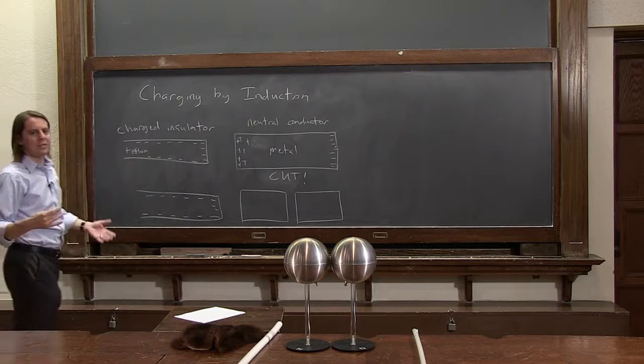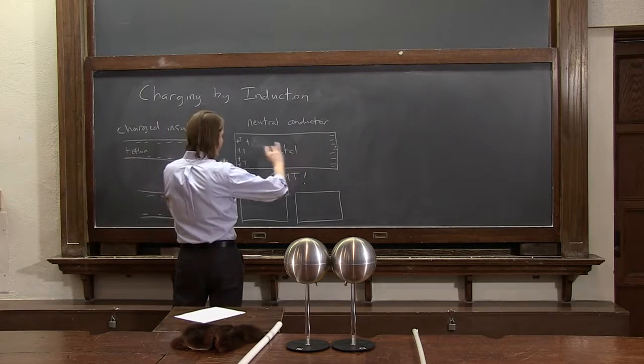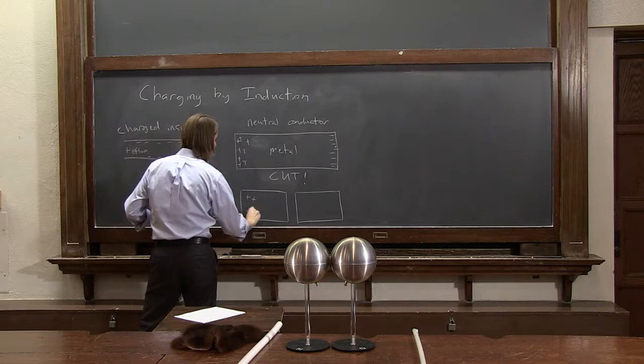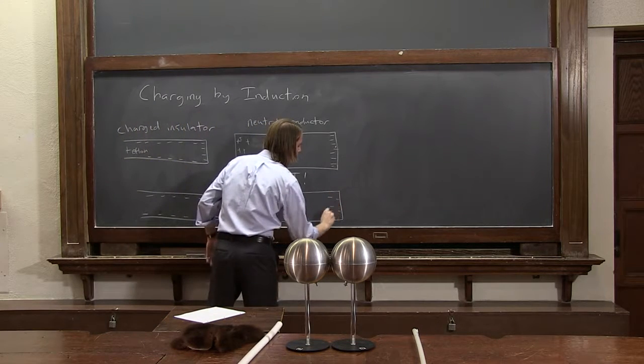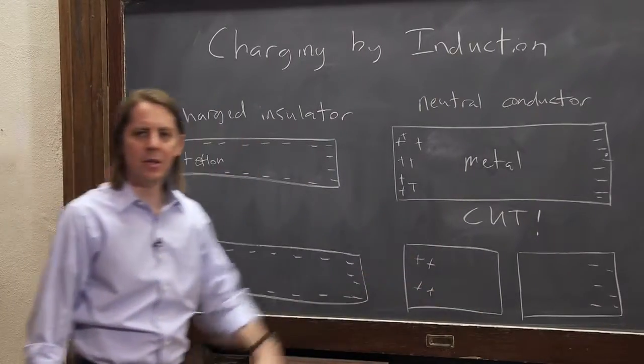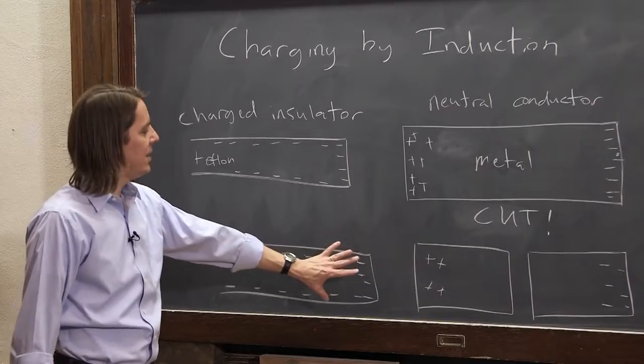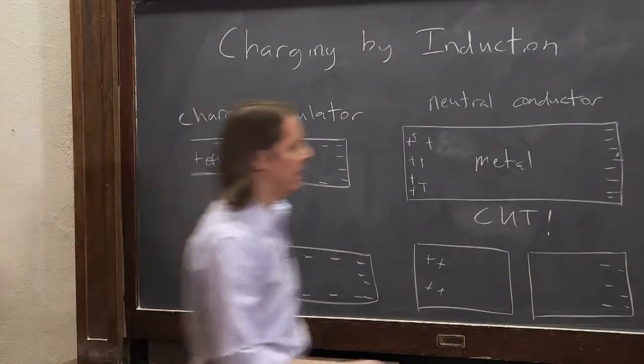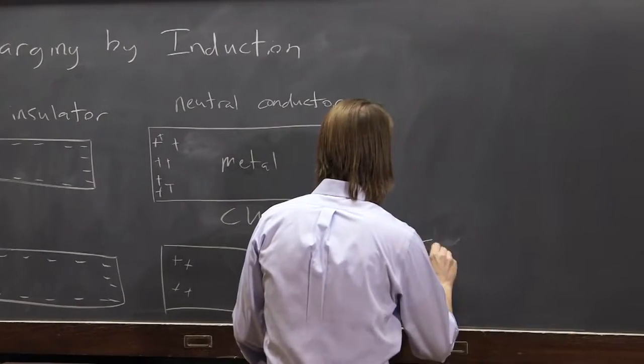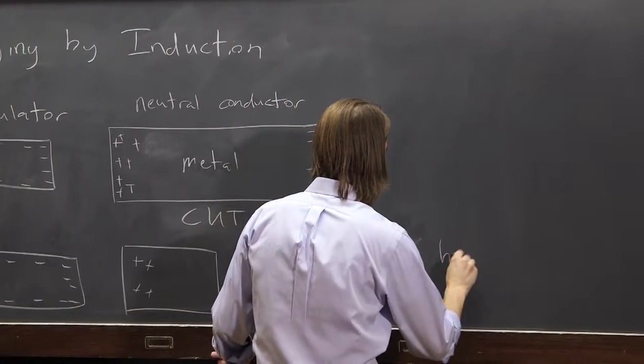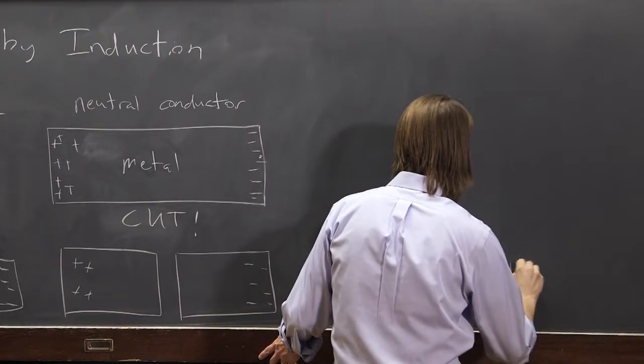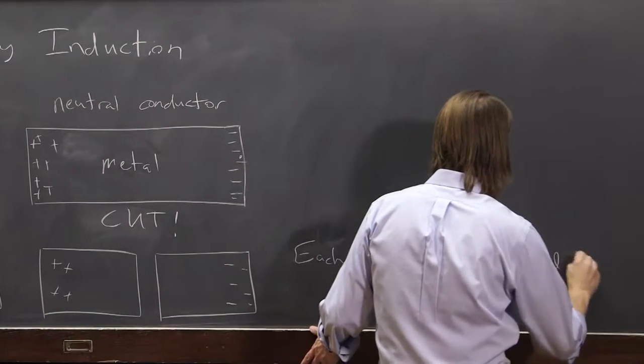So the charges don't have any need to go anywhere. They're happy where they are. But because of the way it's all set up and with this still here, you end up with positive here and negative here. All we did was make an imaginary cut right in the middle. And now, even when this is gone, each half has equal and opposite charge.